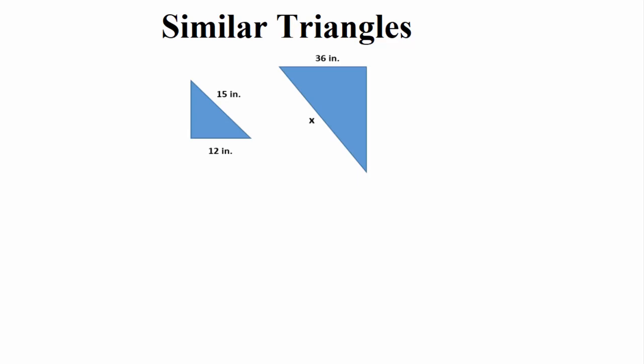Here we have another example of similar triangles. We're going to use proportions to solve them. Remember, our triangles are not always going to be given to us in proper format where they look exactly the same. Sometimes you may get an example where the two triangles are flipped, or one is faced one way and the other is twisted a little differently.